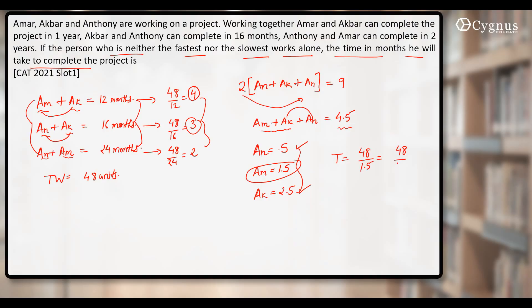So how do we write it? 48 by 3 by 2. This gives you 32 months. That means time taken by Amar to finish the whole work alone will be 32 months.